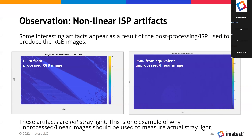Something else we've seen is the importance of using linear image data as input. On the left we have a processed RGB image, and on the right we have an equivalent unprocessed or linear image. The banding artifacts in the image on the left are being quantified as stray light, but in reality they're not stray light. This highlights the importance of using linear image data when measuring stray light. 所以我们把它线性化的处理是相当重要。